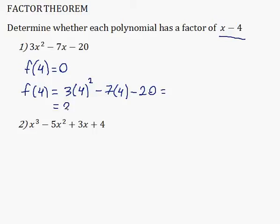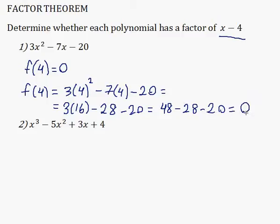So 4 squared is 16, 7 times 4 is 28. 3 times 16 is 48, so 48 minus 28 minus 20 is equal to zero. That means yes, this polynomial does have x minus 4 as a factor.